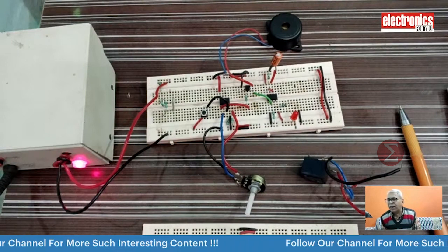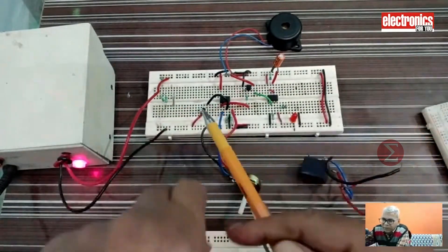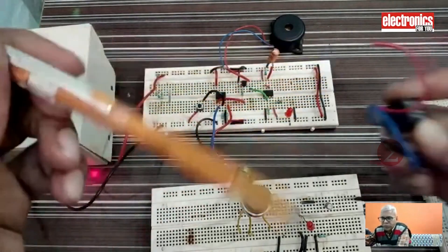To install this in your kitchen, develop a circuit on a general purpose PCB and keep the complete circuit inside the box. In place of the switch, connect the MQ2 sensor, and in place of this LED, connect a relay that will turn on and off the exhaust fan.